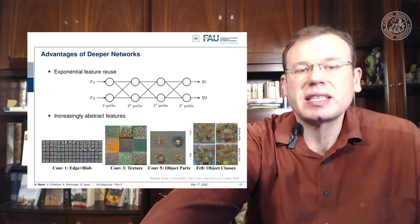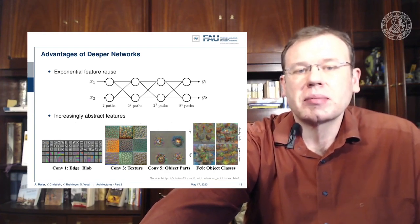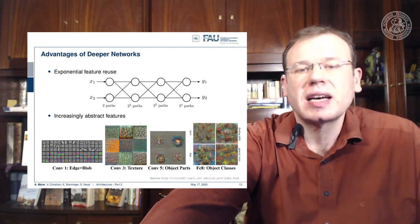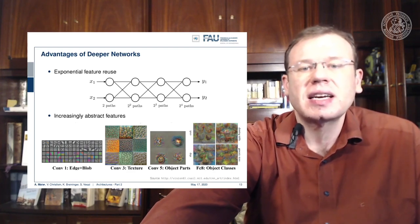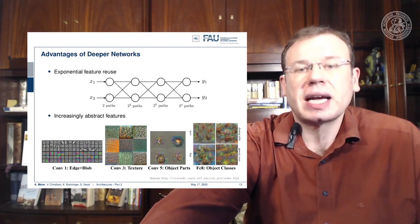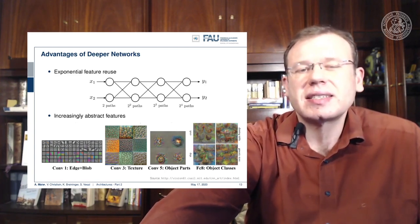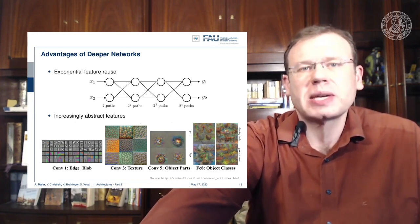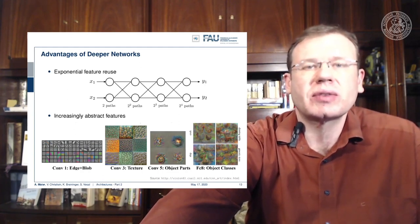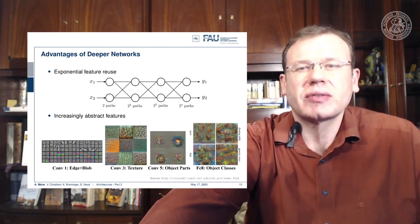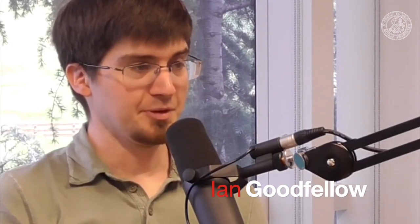Here we see the first layers do maybe edges and blobs. Let's say layer number three does textures, layer number five object parts, layer number eight already object classes. These images here are created from visualizations from AlexNet, so you can see that this somehow seems to be happening really in the network. This is also probably a key reason why deep learning works so well: that we are able to disentangle the function and that we try to compute different things at different positions. I think of deep learning as basically learning programs that have more than one step.